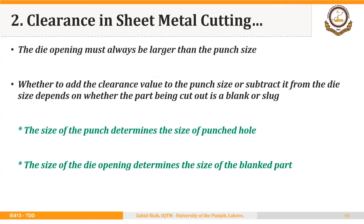How can clearance be used to determine the size of punch and die in cutting operations? The rule of thumb is that the die opening must always be larger than the punch size, since the punch moves into the die opening after cutting. Whether to add the clearance value to the punch size or subtract it from the die size depends on whether the part being cut is a blank or a slug.